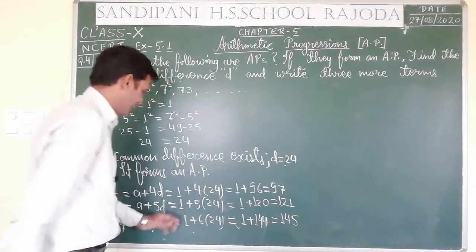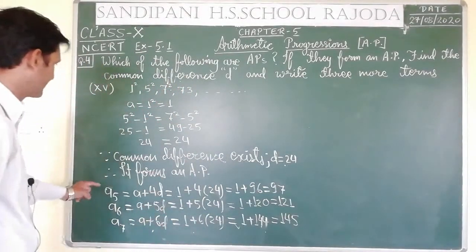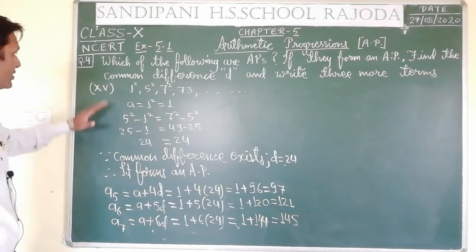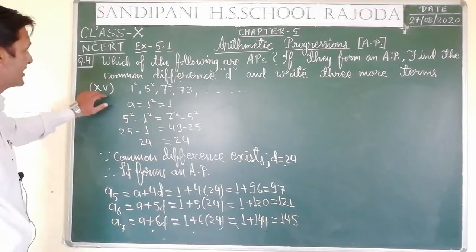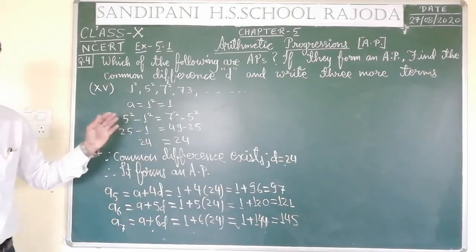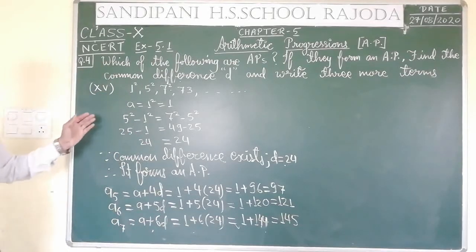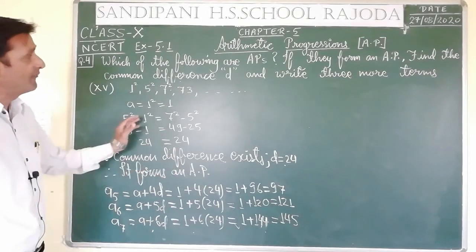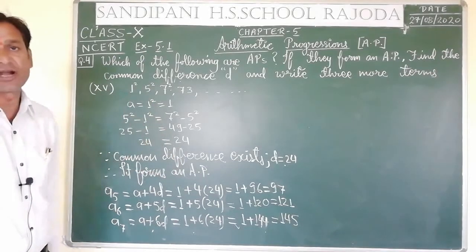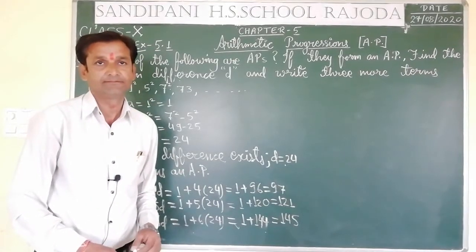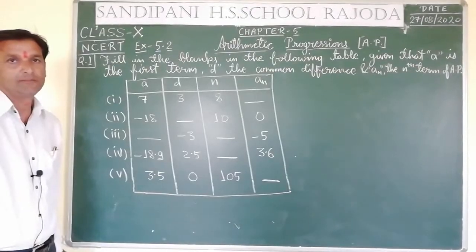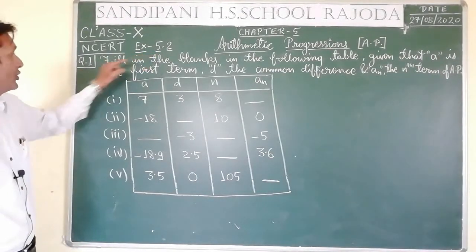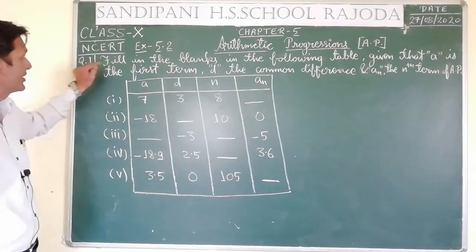So we have calculated the next 3 terms: 97, 121, and 145. All 15 questions of question number 4 are now complete. Now we will start exercise 5.2.